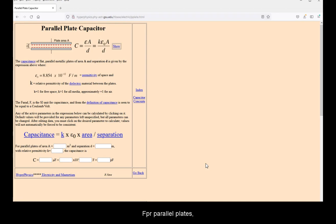For parallel plates, the proportionality with area and distance are both linear. Capacitance is directly proportional to area and inversely proportional to distance.